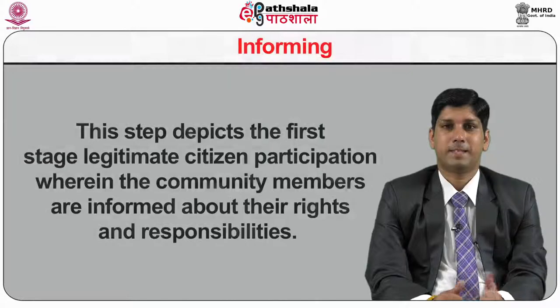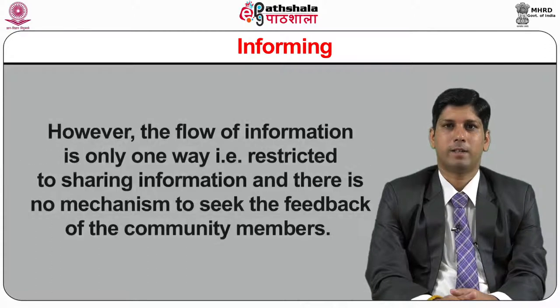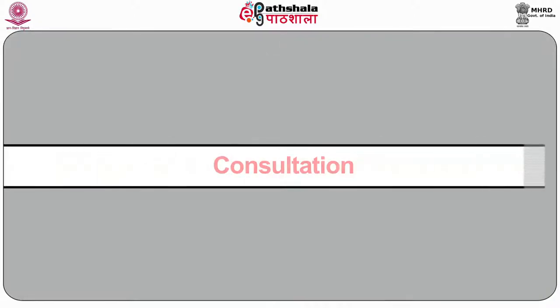The third one is informing. This step depicts the first stage of legitimate citizen participation wherein the community members are informed about their rights and responsibilities. However, the flow of information is only one way, restricted to sharing information, and there is no mechanism to seek the feedback of the community members. The fourth one is consultation. In this stage, citizens' opinions are invited but there is no assurance that the views shall be taken into consideration. Experts believe that this mechanism is more of a window dressing ritual.